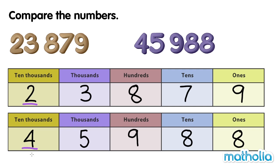So, 23,879 is smaller than 45,988. We can also say 45,988 is greater than 23,879.